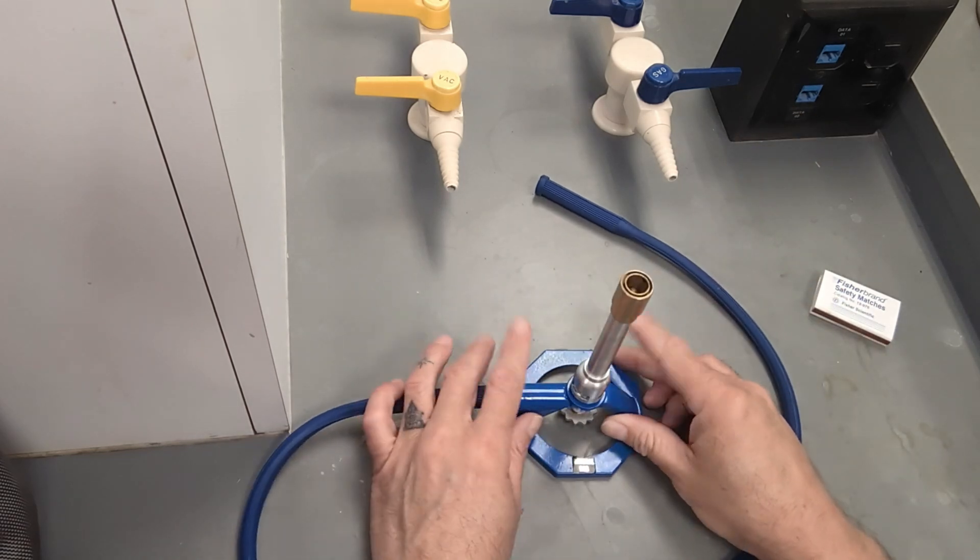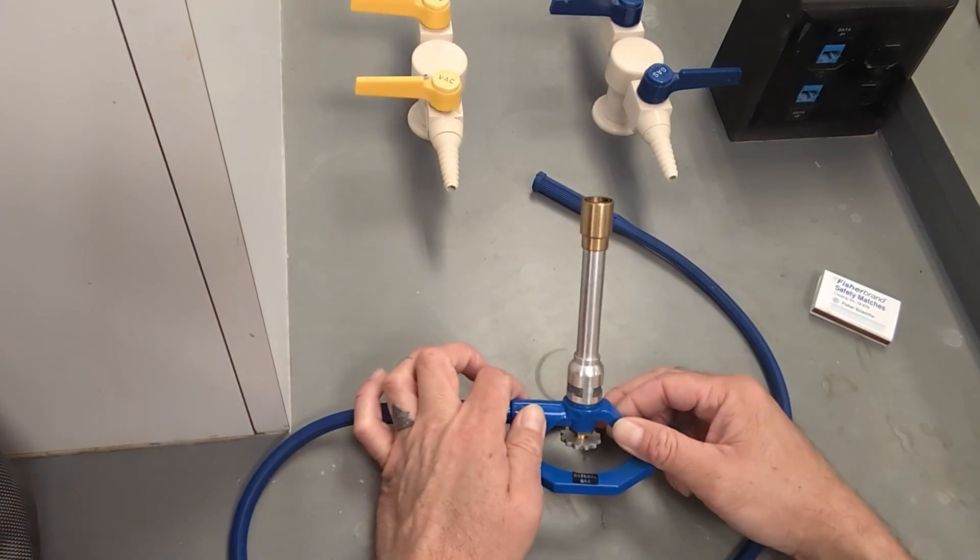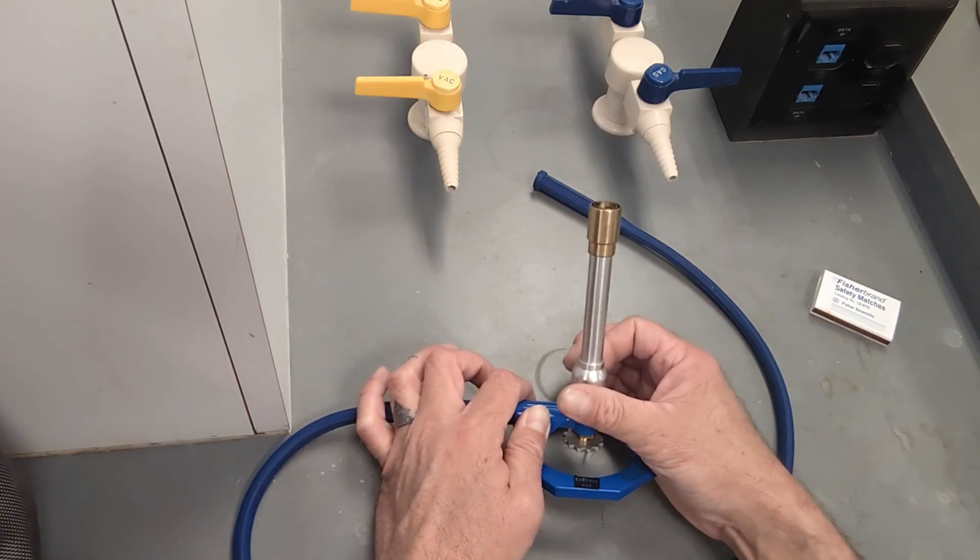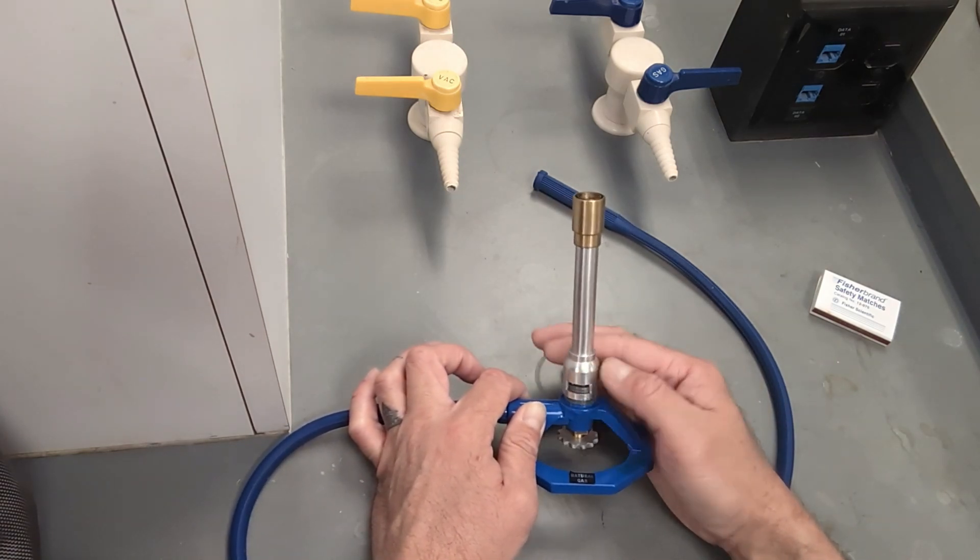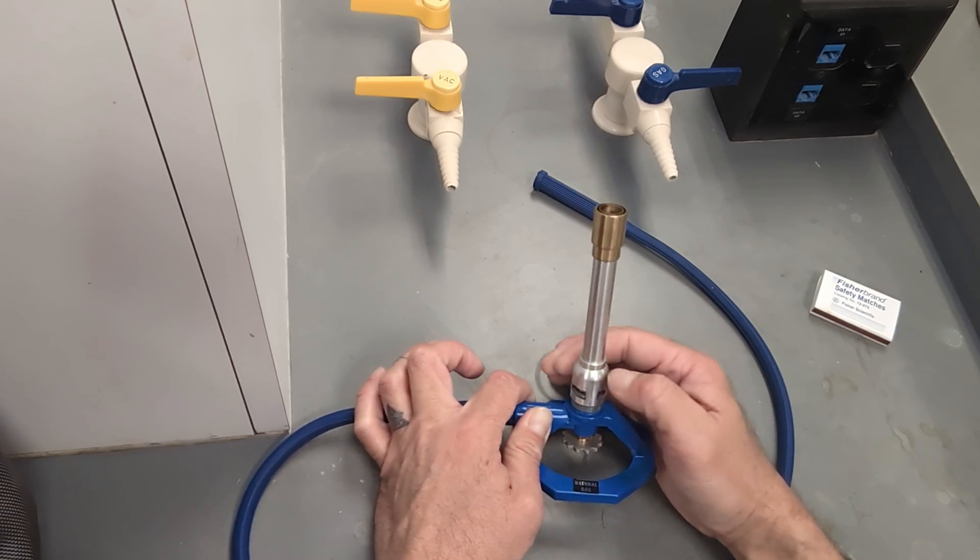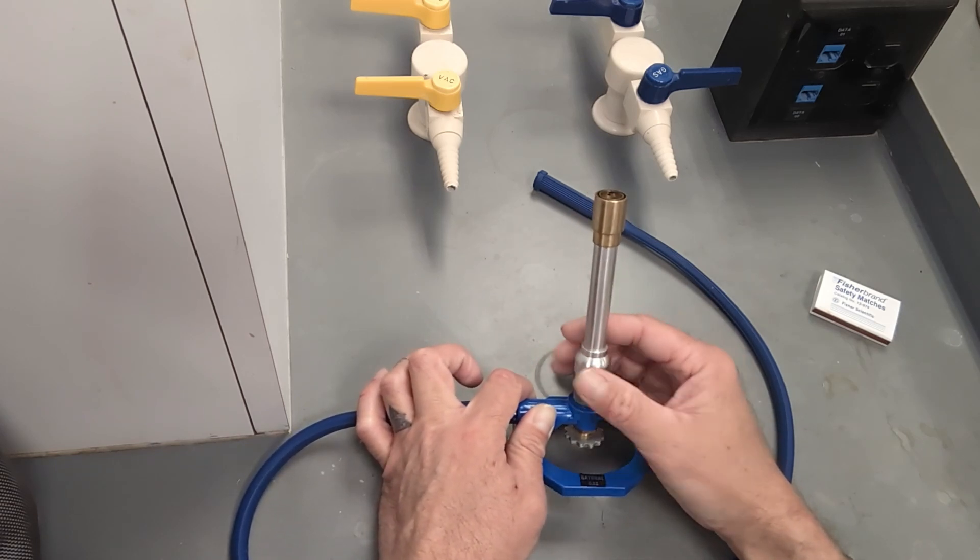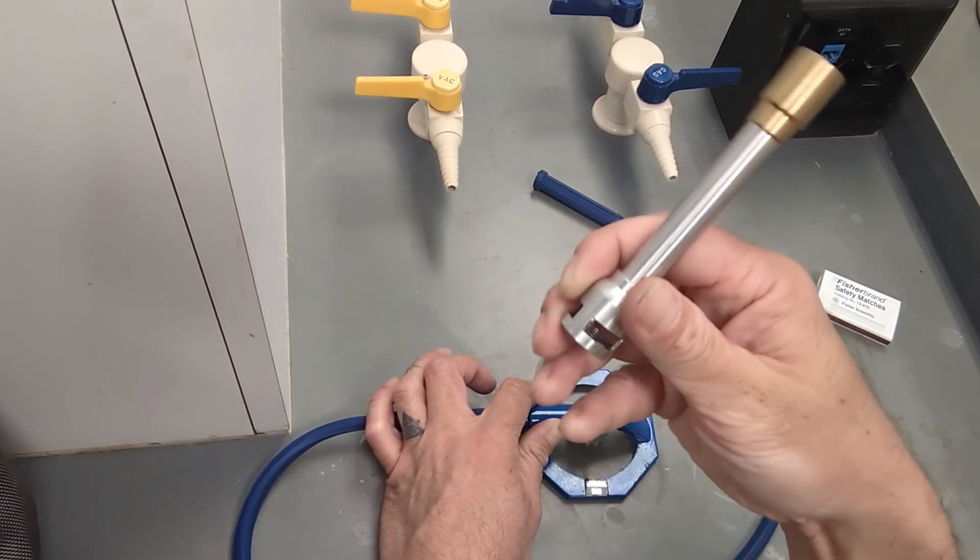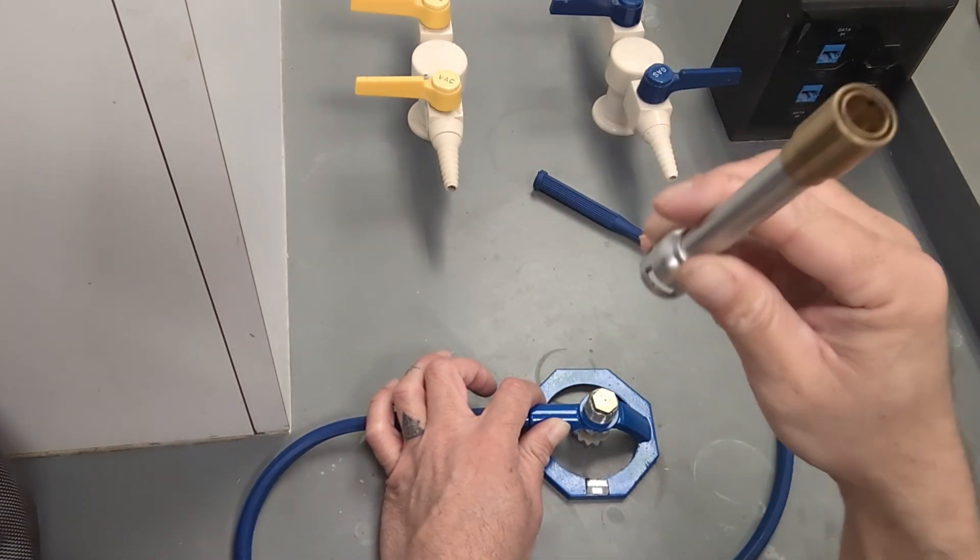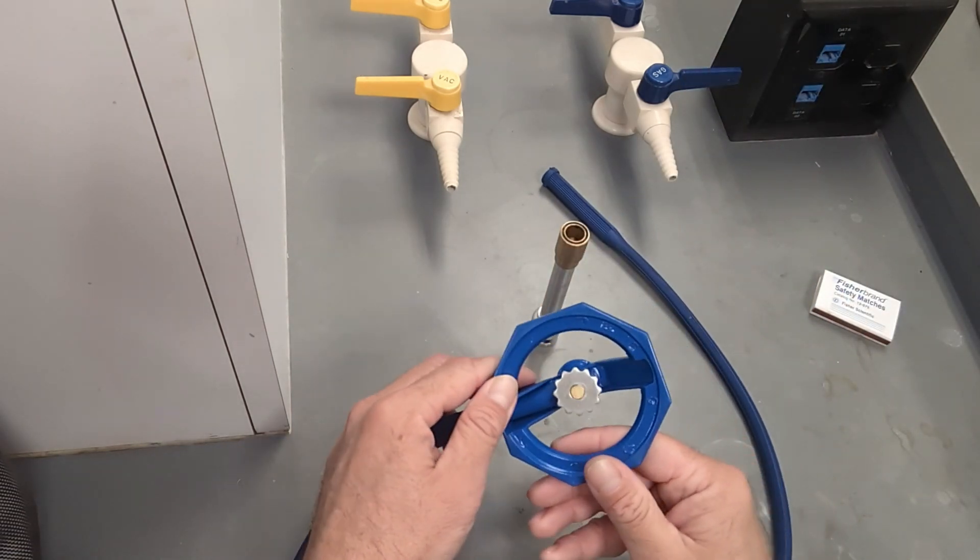The hose, as mentioned before, is used for gas flow. The collar can actually be loosened all the way. As you'll see here, it can come all the way off. And this is where the air flow will come through as the gas enters the Bunsen burner.